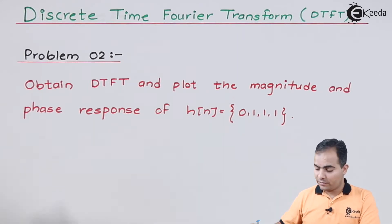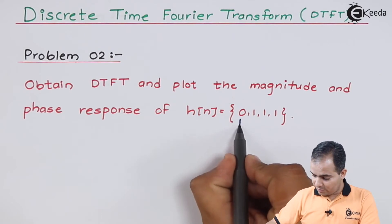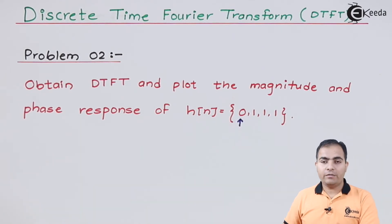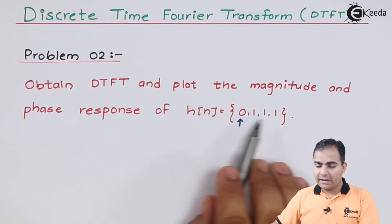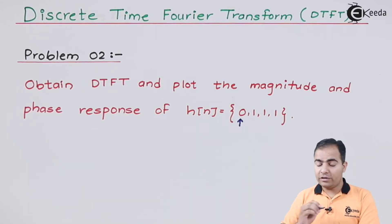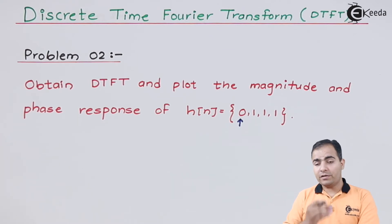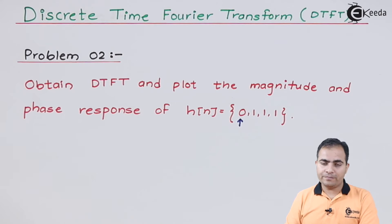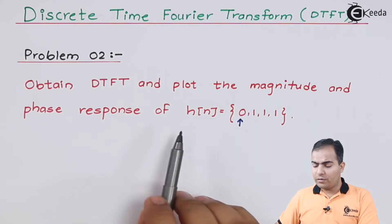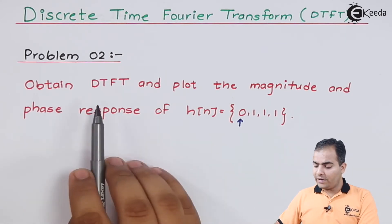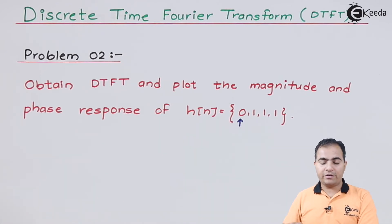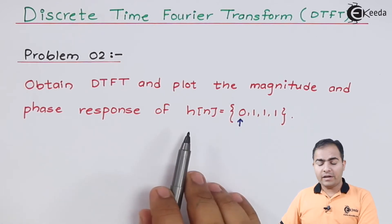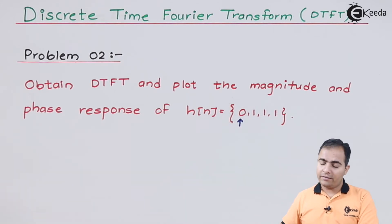In this sequence the origin value is not mentioned, so we will always assume the first element is the origin value, and I will mark it with an arrow. Most of the time in exams they will give you a sequence like this without specifying the origin. So we assume the first element is the origin value. Now we are going to apply the DTFT formula on H(n), and then we will calculate the magnitude and phase response.